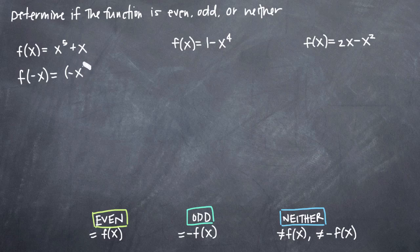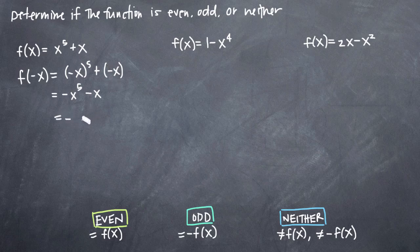We'll get negative x to the fifth plus negative x, and we just want to simplify as much as we can here. Negative x to the fifth will give us negative x to the fifth, minus x. At first glance, this might not look the same as our original function f of x, but if we factor out a negative sign, we'll get negative times the quantity x to the fifth plus x.